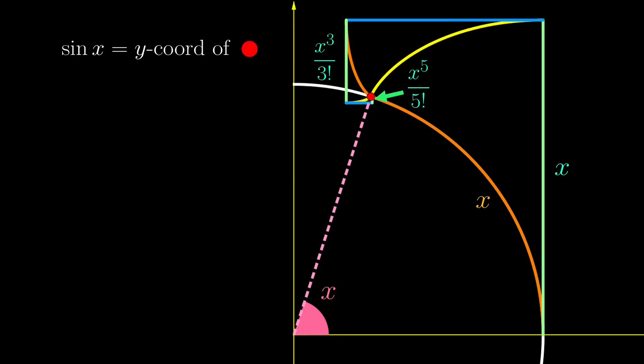So sine x, being the y-coordinate of the red dot, is obtained by first adding x, which goes above the point, then subtract x cubed over 3 factorial, which goes slightly below the red dot. So we need to add x to the power of 5 over 5 factorial, which goes ever so slightly above the red dot, and so on. So we demonstrated why sine x has this power series, and even explained what each term means geometrically.